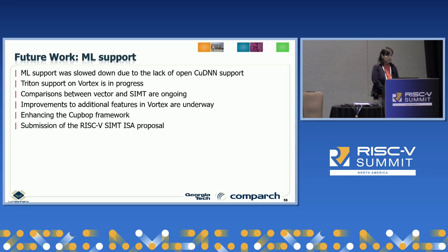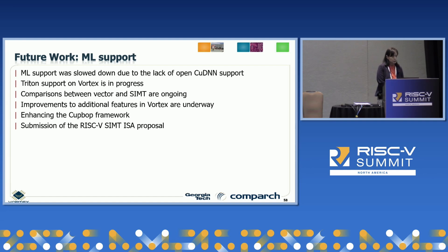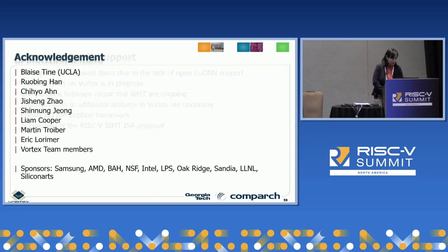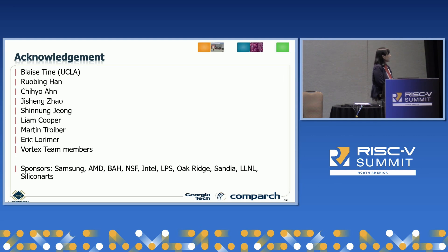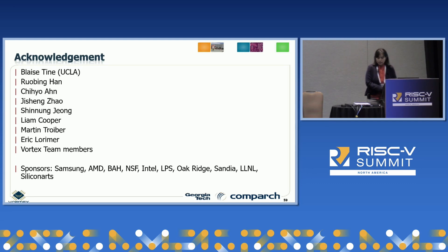We also have work comparing vector versus SIMT approaches and the benefits of each. We keep updating the Vortex open-source GPU to improve it, adding more features to the CUP-UP framework, and working on the RISC-V SIMT ISA proposals. This work is done by a large team. The main contributors include Blaise Thain, now a professor at UCLA, and Robin Han, who is finishing his PhD. Several companies have also supported us on various components.